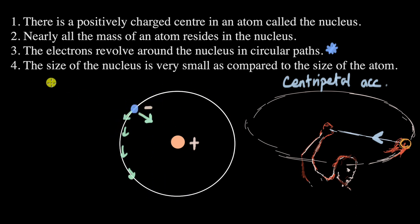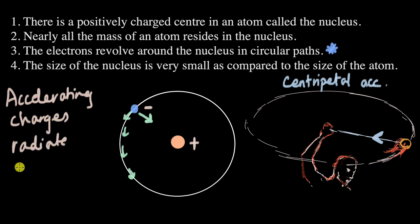Now if a charge is accelerating, accelerating charges, they radiate energy, they radiate energy. And what form of energy can they radiate? They can radiate energy in the form of electromagnetic radiation. For example, radio waves, microwaves, and any kind of electromagnetic radiation. But if the electrons are constantly radiating or losing energy,